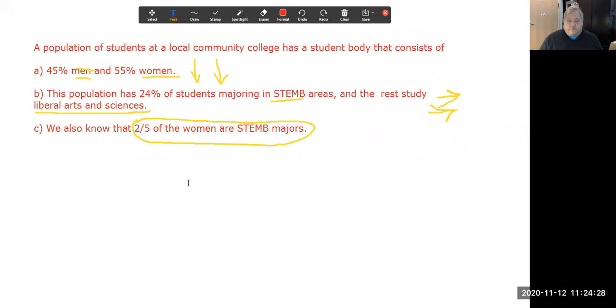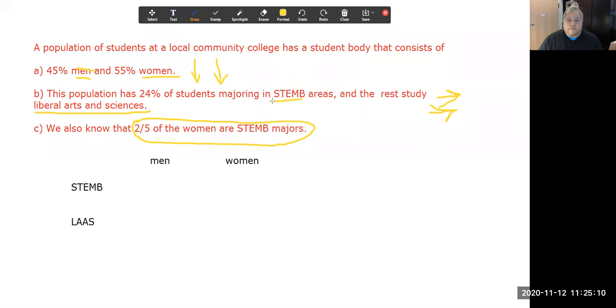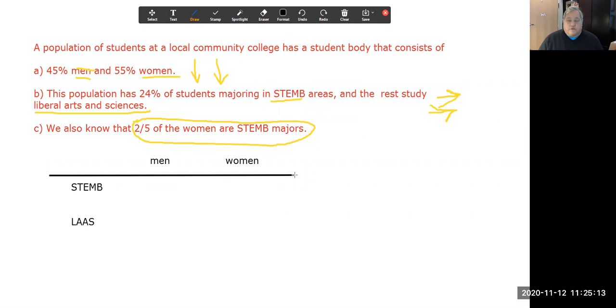And that's what I'm going to try and do: a table that is the way I describe my probability space for the event student body at a local community college. The outcomes are going to be men and women one way by column, and then by row I'm going to talk about these being STEMB majors or liberal arts and sciences majors. So I can break down this entire population into rows or I can do the same by column.